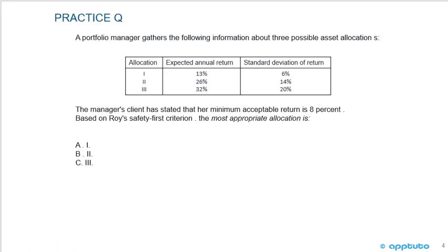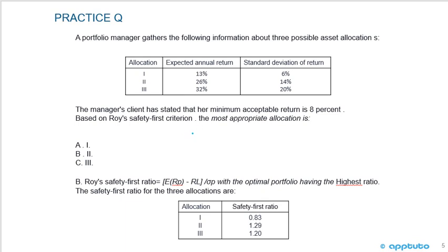Let's do a practice problem to check your understanding. A portfolio manager gathers information about three possible asset allocations. Allocation one: expected annual return 13%, standard deviation 6%. Allocation two: expected annual return 26%, standard deviation 14%. Allocation three: expected annual return 32%, standard deviation 20%. The client's minimum acceptable return is 8%. Based on Roy's safety first criterion, which allocation is most appropriate? Remember, the safety first ratio is the expected return minus the minimum return, divided by the standard deviation.